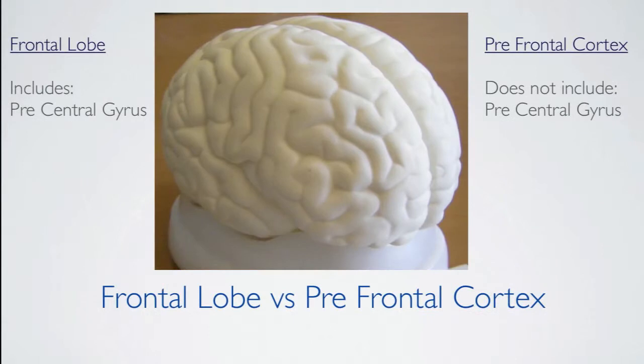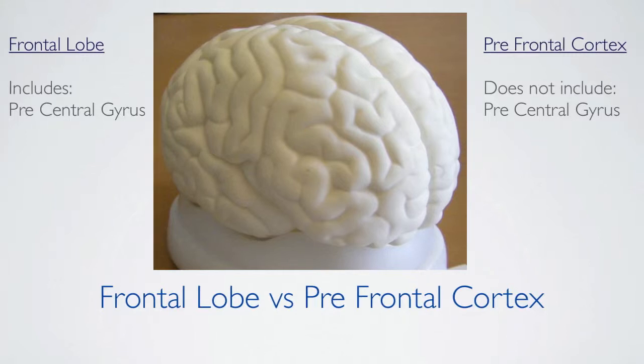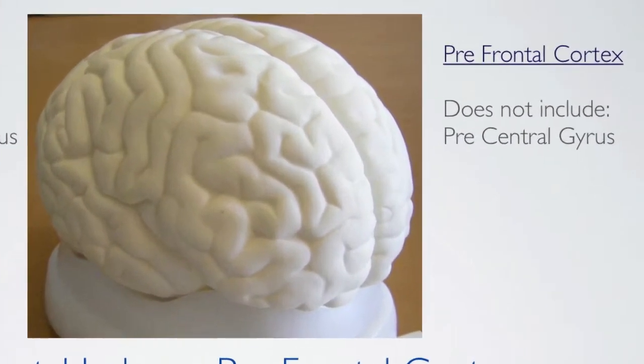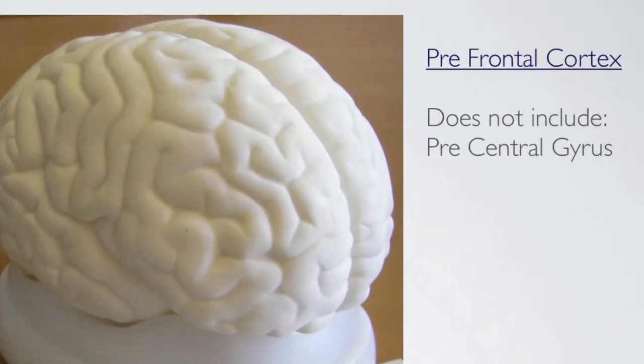You will often hear people refer to the frontal lobes as the frontal lobe or as the prefrontal cortex. While they are very similar, they do have some differences. For example, the frontal lobe includes the precentral gyrus, whereas the prefrontal cortex does not include the precentral gyrus.